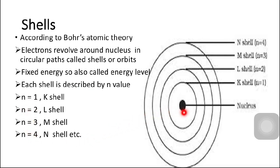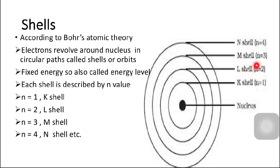Here is a structure of an atom — in the center the nucleus is present, and around the nucleus, shells are present. When the value of n is 1, it is the K shell. When n is 2, it is the L shell. When n is 3, it is the M shell. And when n is 4, it is the N shell, and so on.